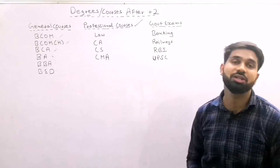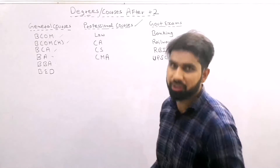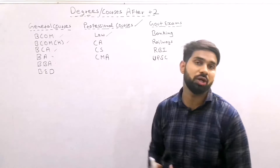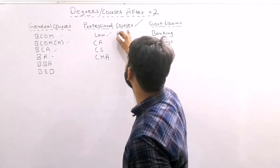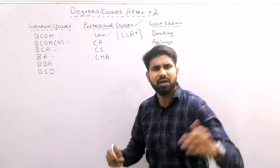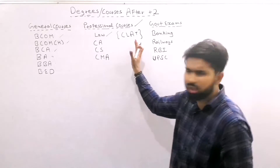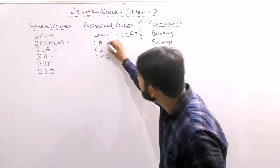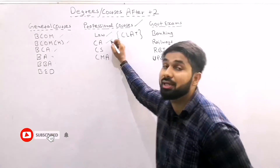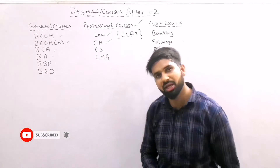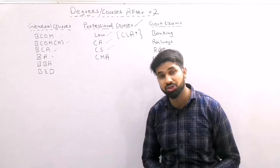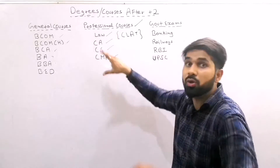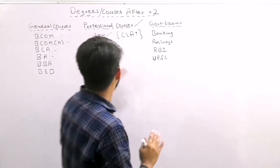Now we have Professional courses — related to specific professions. First is Law. There is an all-India level examination called CLAT for students from Class 12 who have interest in law, through which you can go to law colleges. Next is the Chartered Accountancy course, then the Company Secretary course, and then CMA — related to the Institute of Cost Accountants of India. Kids interested in professional courses can go for these.